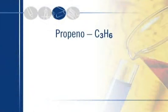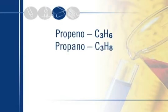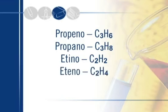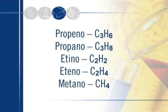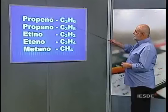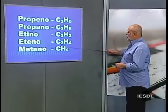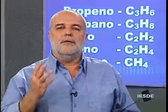Propeno é alceno de três carbonos: C3H6, seis hidrogênios. Propano: C3H8, oito hidrogênios. Etino: alcino de dois carbonos, CnH2n-2, então C2H2, dois hidrogênios. Eteno: alceno C2H4, quatro hidrogênios. Metano: alcano de um carbono, CH4, quatro hidrogênios. A cada dois hidrogênios se forma uma molécula de água. Quem tiver mais hidrogênios formará mais moléculas de água. É o propano C3H8 que vai formar quatro de água, sendo quem dá a maior quantidade de água na combustão.